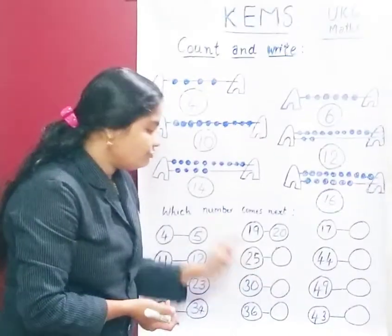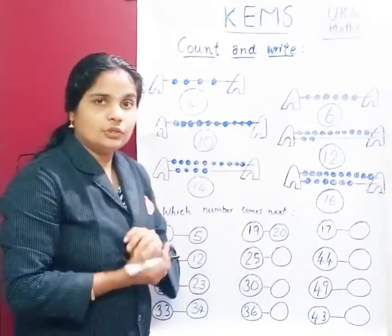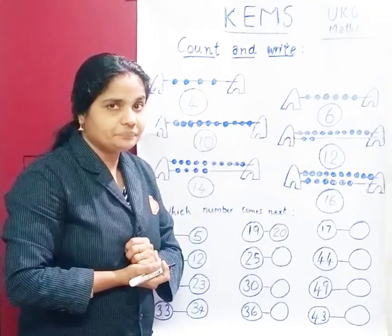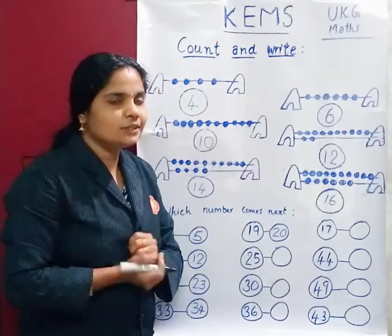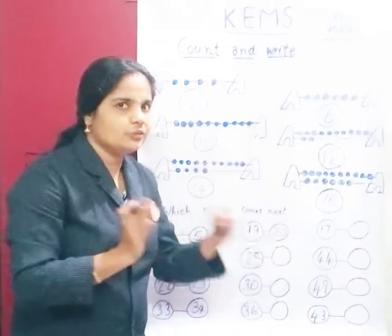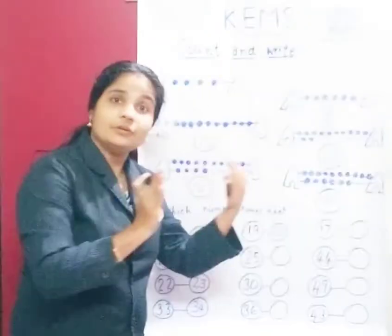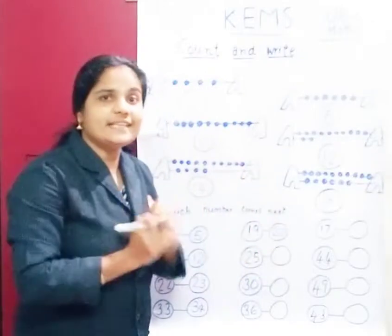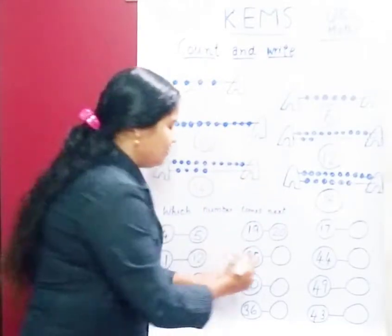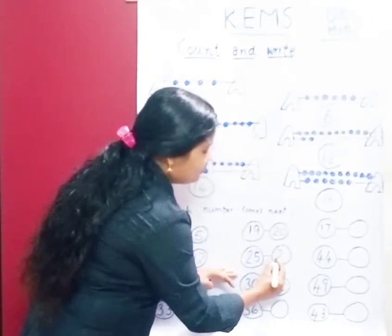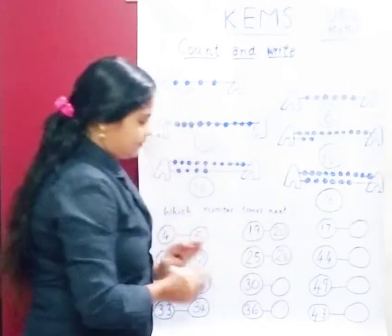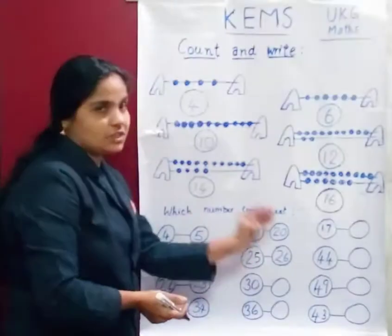Then 25. Next number after 25. Say: 25, 26. Very good. 25, 26. Write 2, 6 — 26.